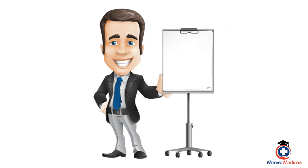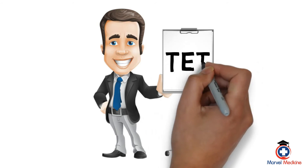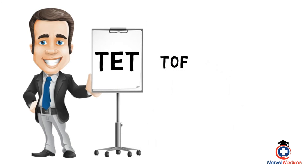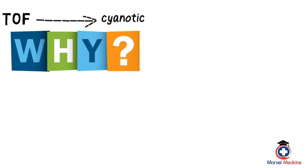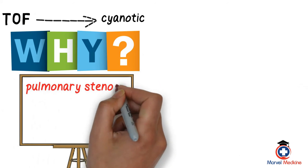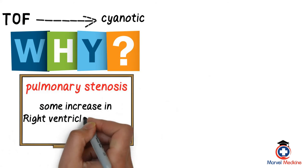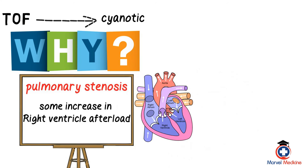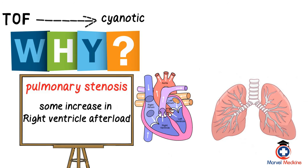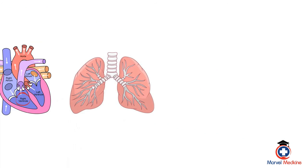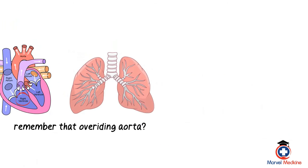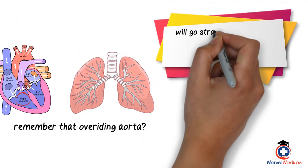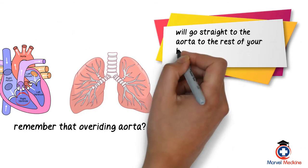Now we can talk about what a tet spell is — they love asking questions on this. This is where the child with Tetralogy of Fallot becomes cyanotic. Why? It's because of the pulmonary stenosis, or some increase in right ventricular afterload — let's say coughing — making it much harder for blood to go to the lungs. Where does it go instead? That overriding aorta. All that deoxygenated blood from the right ventricle goes straight to the aorta and the rest of the body instead of going to the lungs to get oxygenated.